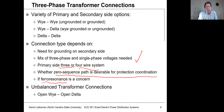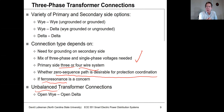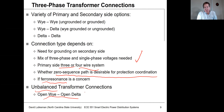Besides three-phase transformer connections using three single-phase transformers, there are also other options for unbalanced transformer connections where you can use just two transformers to supply three-phase power. These are sometimes referred to as open connection types, like open-Y and open-delta.